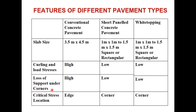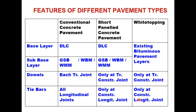Loss of support under corners is high in case of thick pavement and low in short paneled and white topping. The critical stress location in conventional pavement is edge loading, whereas in short paneled and white topping it is corner loading. The base layer is DLC for conventional and short paneled pavements, with sub-base of GSP, WBM, or WMM, whereas for white topping the existing bituminous pavement layer is taken as the base or sub-base layer.